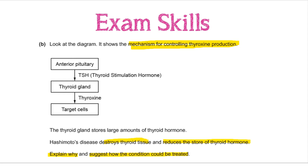When we explain this we go back to explaining how negative feedback works. The pituitary gland responds to different levels of thyroxine: when we've got high levels of thyroxine, TSH production is inhibited. Whereas if we've got a low store of thyroxine as a result of Hashimoto's disease, the pituitary gland is going to keep making TSH. By going back to our knowledge of negative feedback systems and giving an explanation of how it works, linking it into the disease and the problem described, we've got three of the four marks. The last one is for suggesting how the condition can be treated.